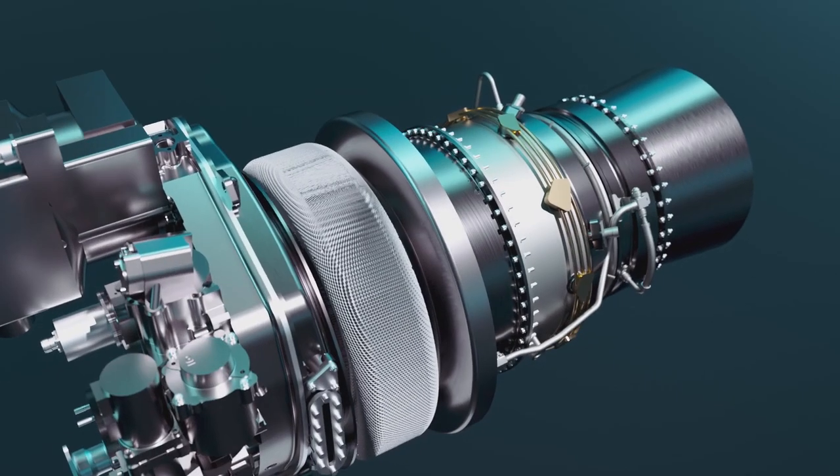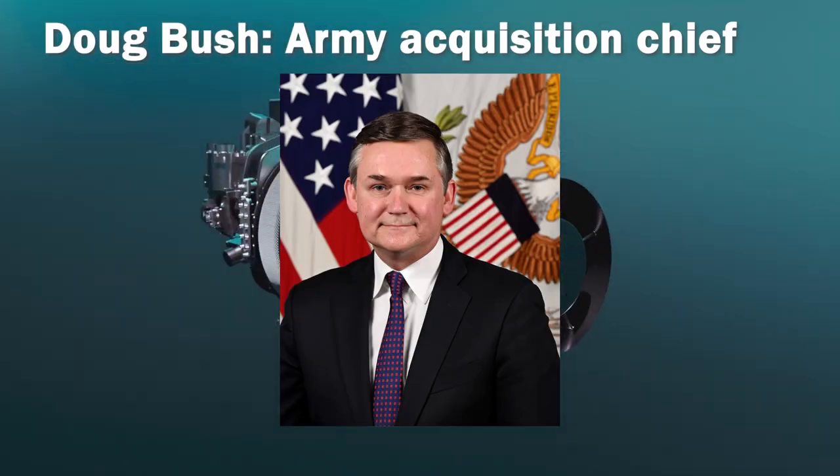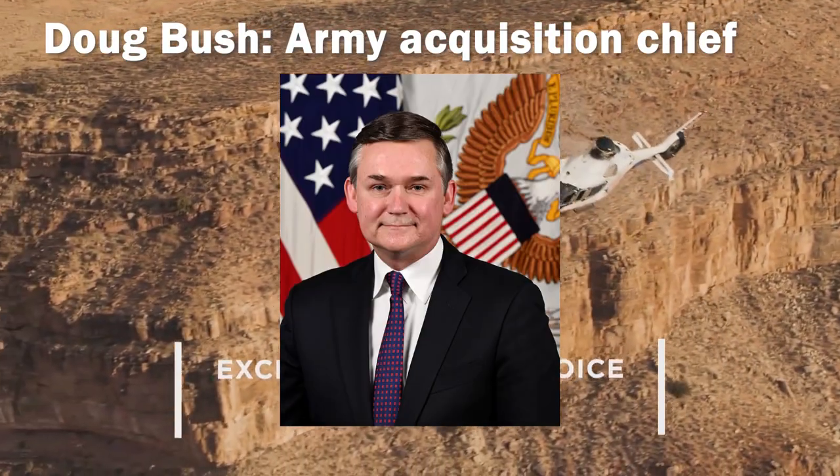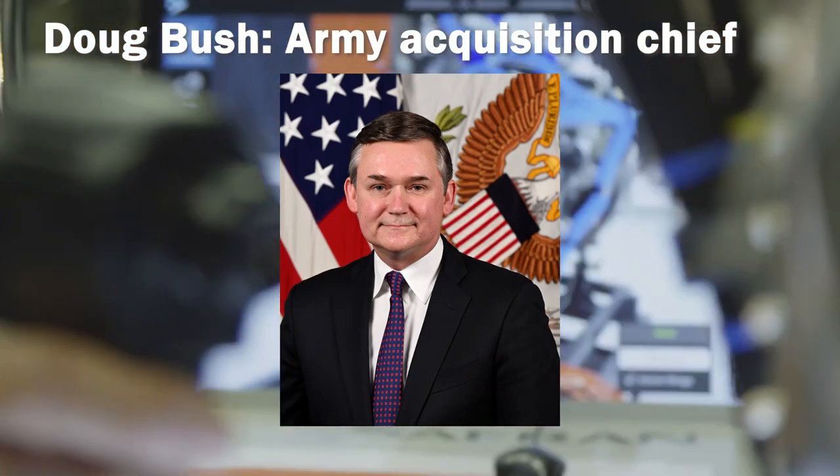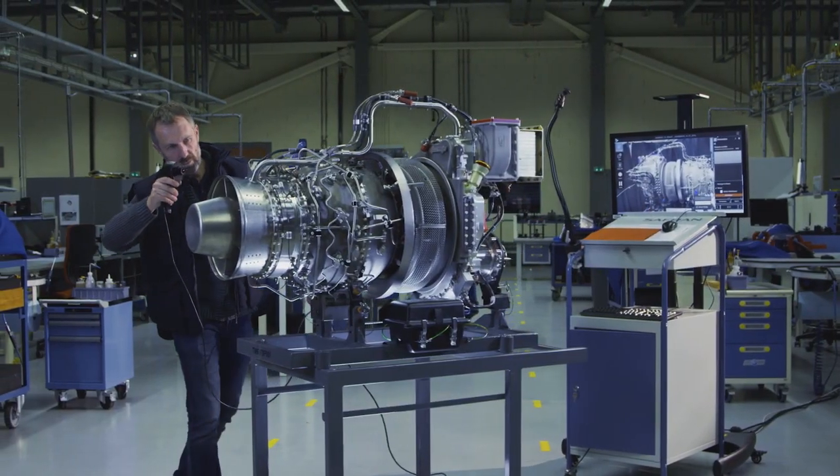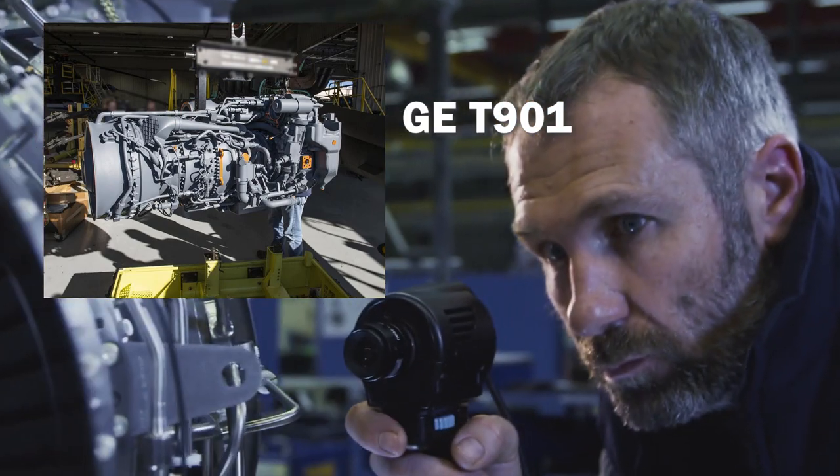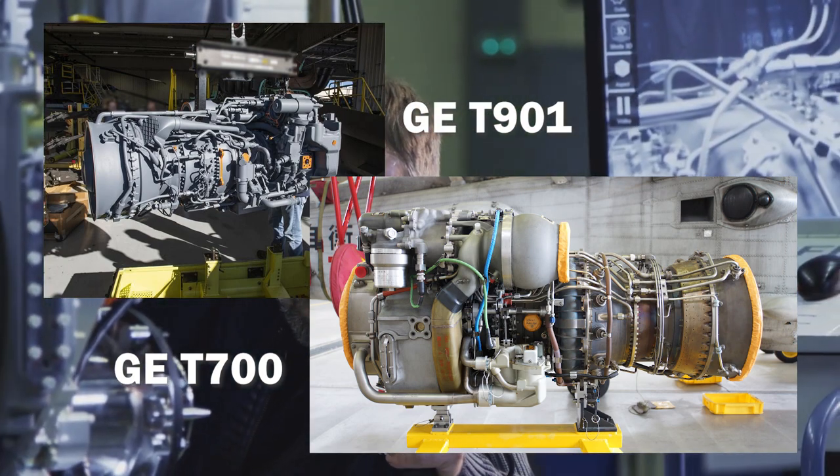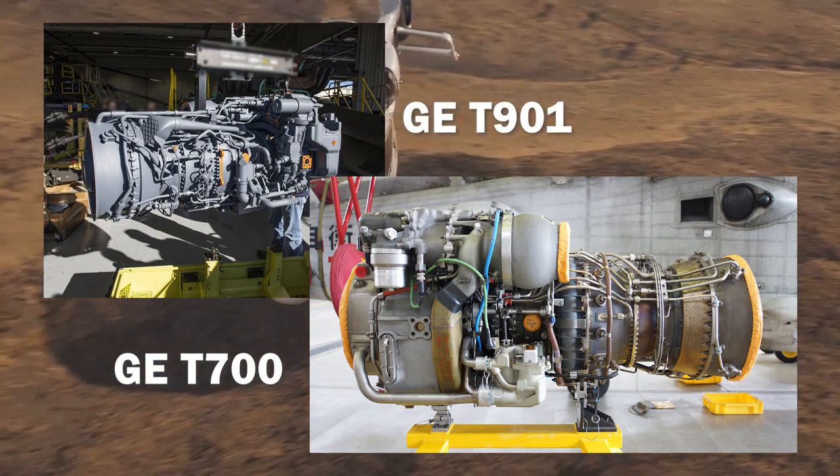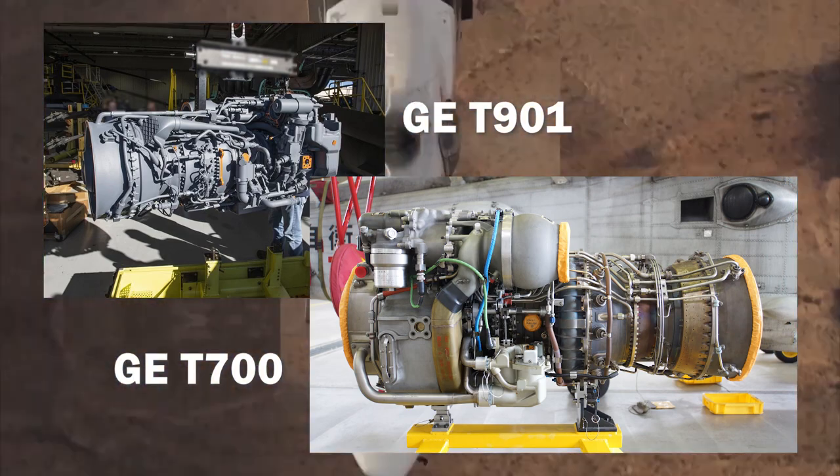Now, according to the Army's acquisition chief, Doug Bush, the service will not deliver ITEP engines for installation on the FARA prototypes until early next year. The T-901 engine will replace the 1970s-era T-700 engine in both the Army's Black Hawk and Apache helicopters, and it is the engine of choice for the FARA program.